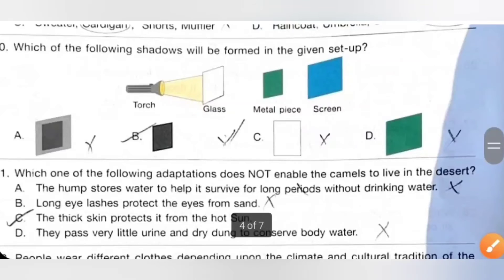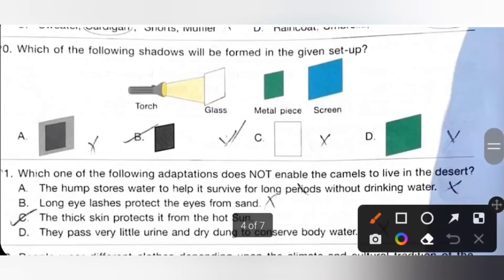Twentieth: Which of the following shadow will be formed in the given setup? Option A, shadow will be formed in the given setup. Option A is the correct answer.